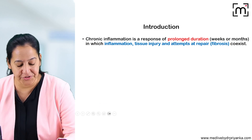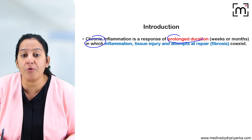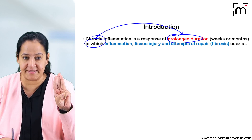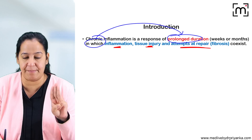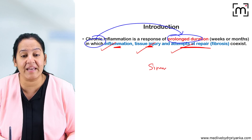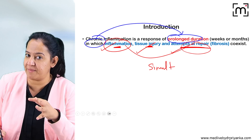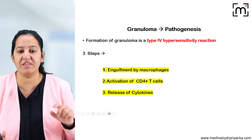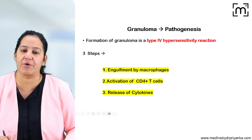What is chronic inflammation? As the name indicates, it is inflammation of prolonged duration. Three things take place simultaneously: inflammation, tissue injury, and attempts to repair. Because the inflammation is too prolonged, repair also starts simultaneously — on one end there is inflammation, and on the other end there is repair. That is the meaning of chronic inflammation: inflammation, injury, and repair simultaneously.